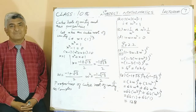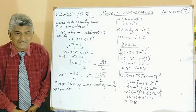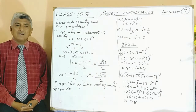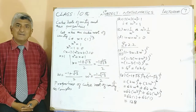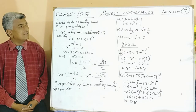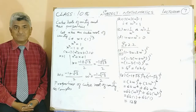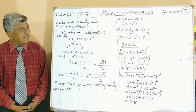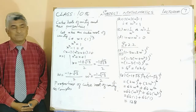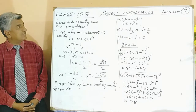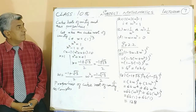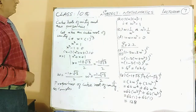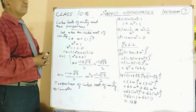Bismillahirrahmanirrahim. In our lecture 6, we discussed the nature of roots, discriminant, and we solved exercise 2.1. Today, in lecture 7, before starting exercise 2.2, I would like to explain how you will find the cube roots of unity, and then we will discuss the properties of cube roots of unity.